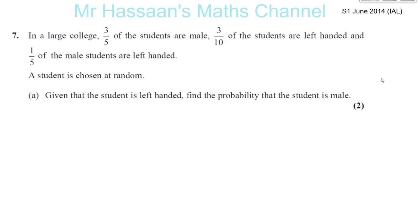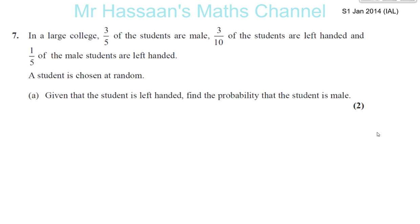Here we have a question from S1, January 2014, International A-Level IAL. In a large college, three-fifths of the students are male, three-tenths of the students are left-handed, and one-fifth of the male students are left-handed. A student is chosen at random. My first instinct in a question like this is to make something called a logic table, which will make life easy for us and allow us to answer as many questions as we can from it.